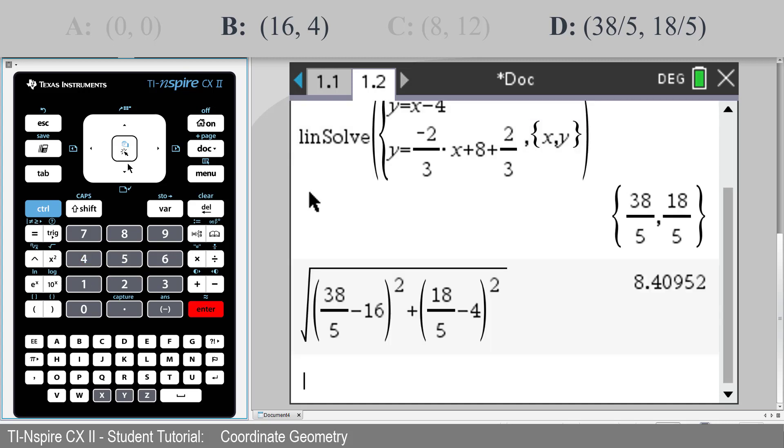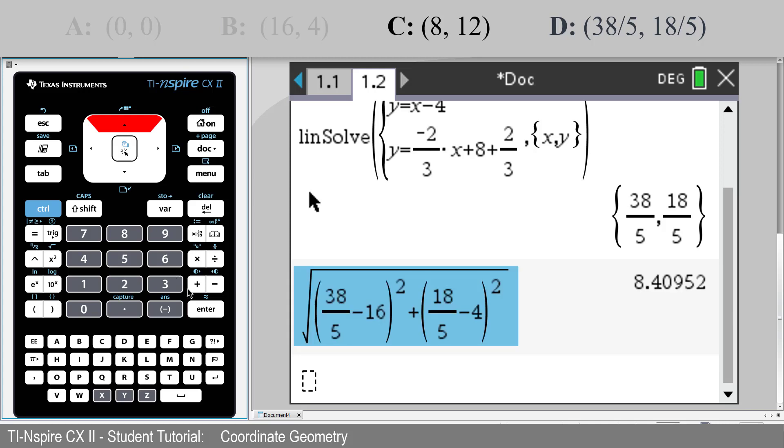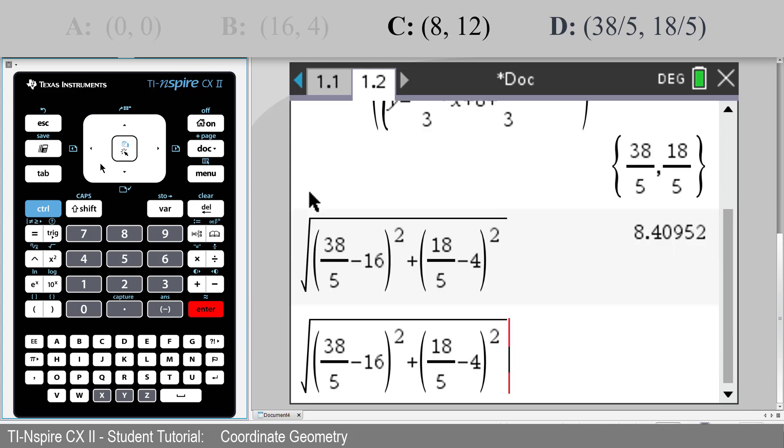And we get the same answer. That's the distance from D to B. From D to C is the square root of 38 over 5 minus 8 all squared, plus 18 over 5 minus 12 all squared. And we get the same answer.